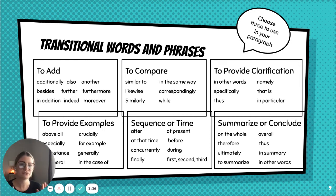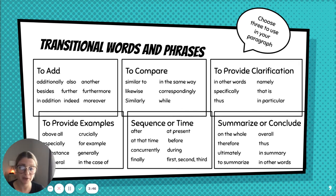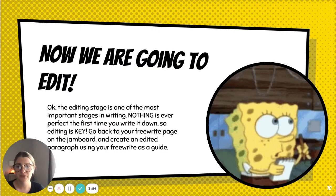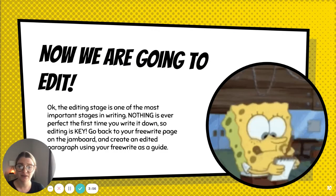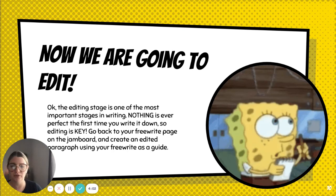Right now, choose three words from this chart that you're going to use in your paragraph. Three words — one, two, three. I'm going to wait. Now that you've chosen your three words, you're going to edit. Editing is one of the most important stages of writing — nothing is ever perfect the first time you write it down, so editing is key.